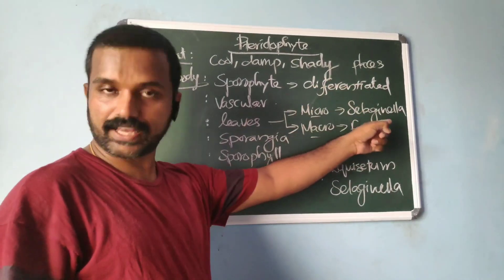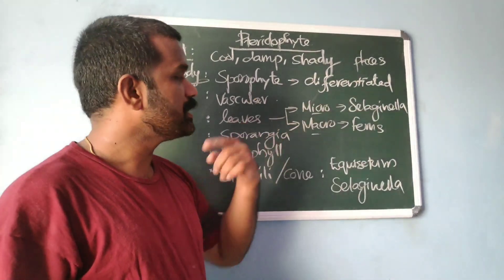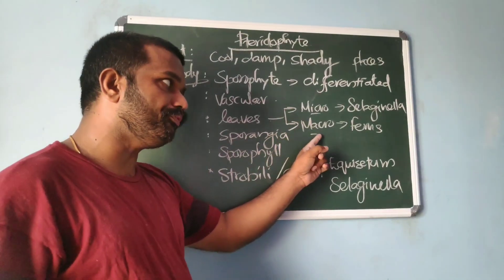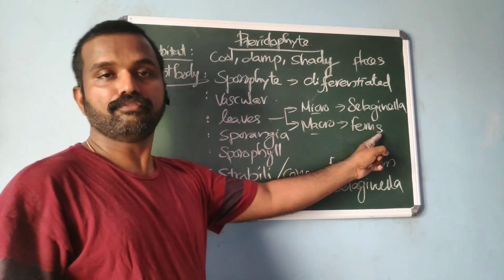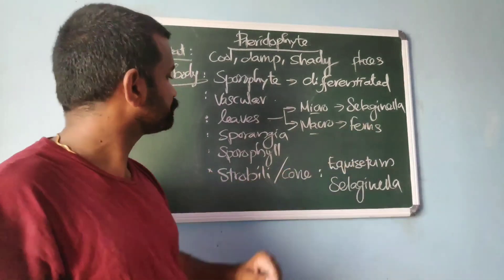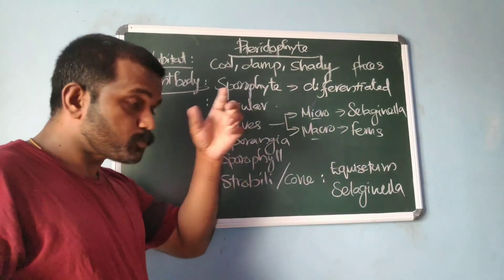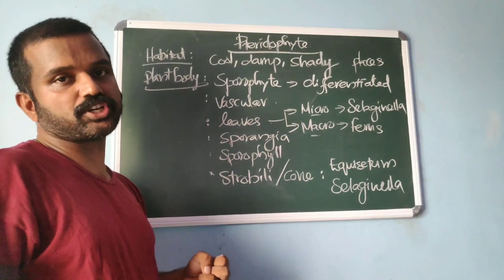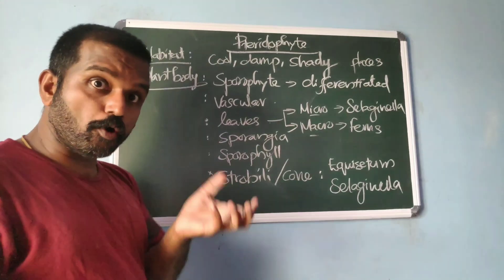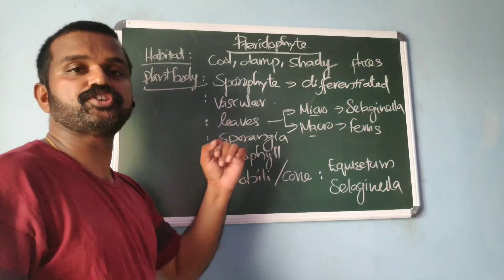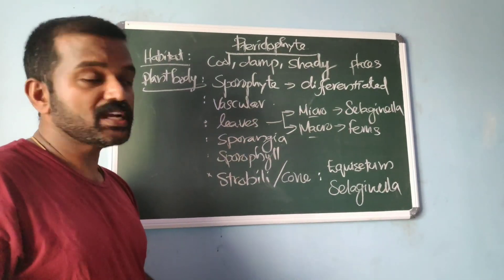The leaves in pteridophytes can be either small or large. Small leaves are known as microphylls, as seen in Selaginella. Large leaves are known as macrophylls, as seen in ferns.